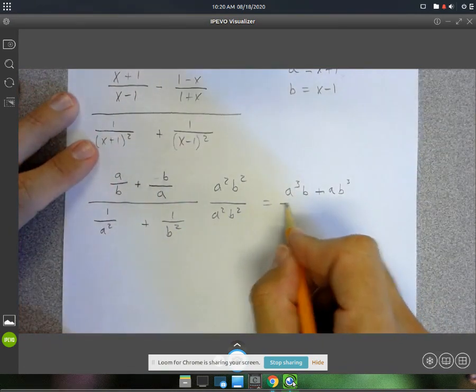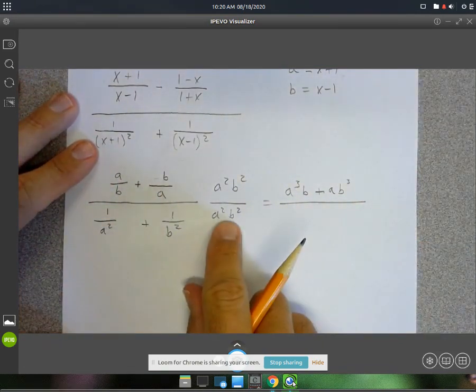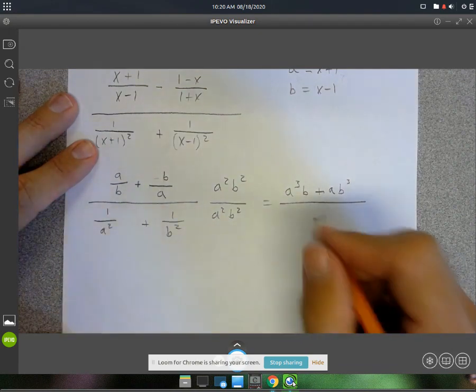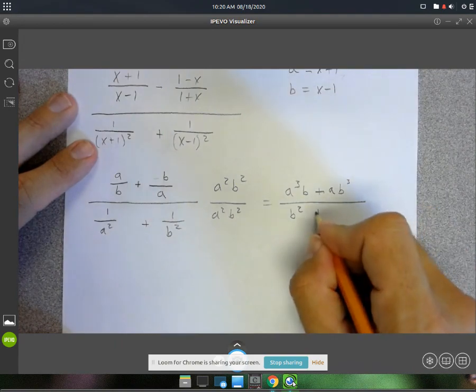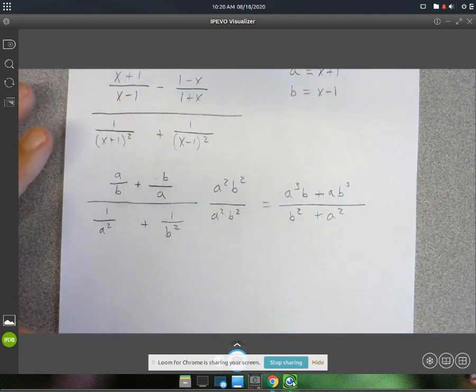Alright, in the denominator, a squared, b squared times this, we'll just leave us with a b squared. And then that times that, we'll just leave us with an a squared.